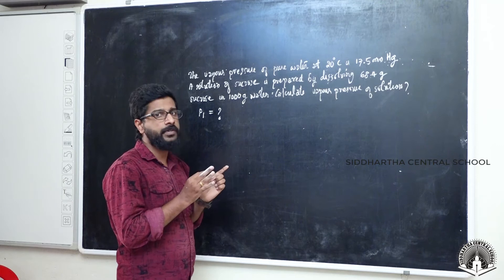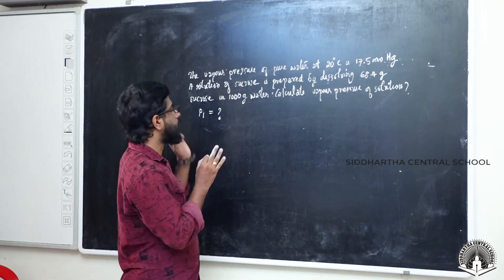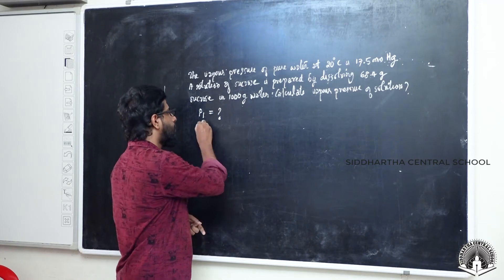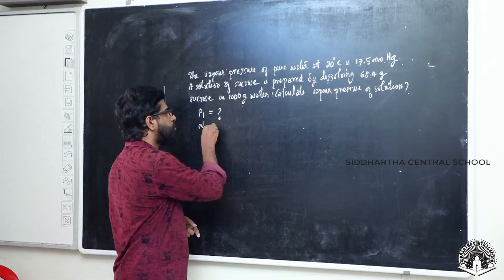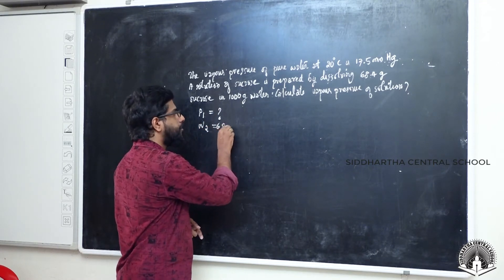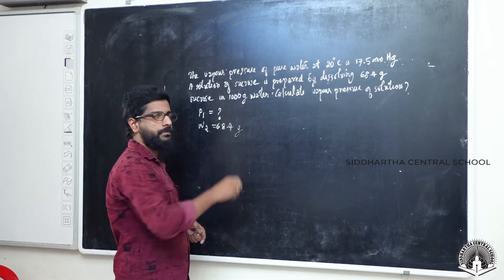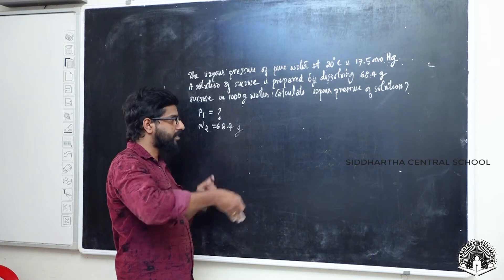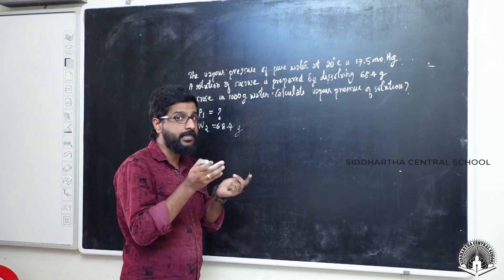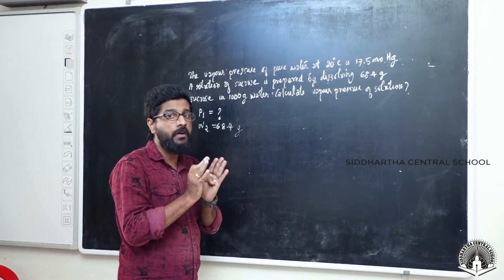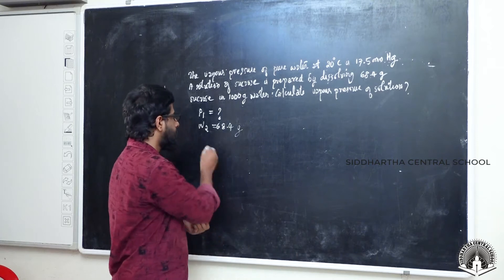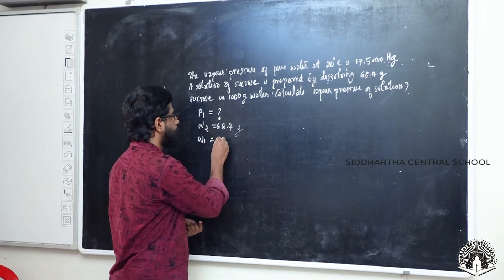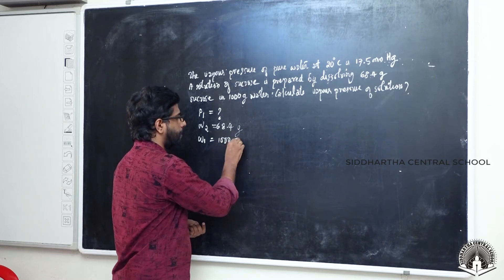The given mass of solute — sucrose is the solute — so W2 equals 16.4g. And 16.4g of sucrose is dissolved in 1000g of water, so the given mass of solvent W1 equals 1000g.